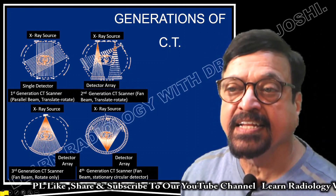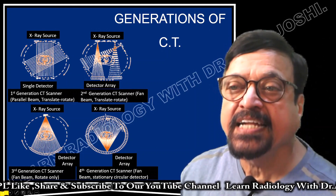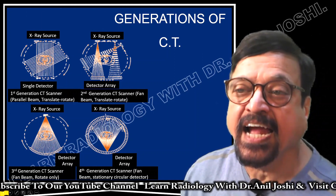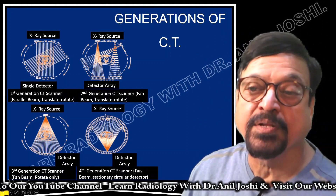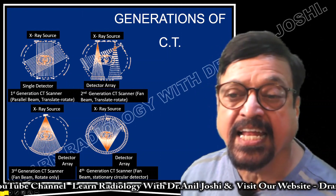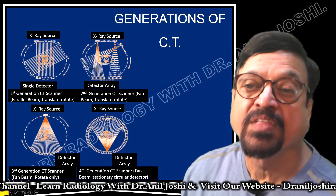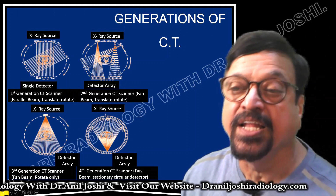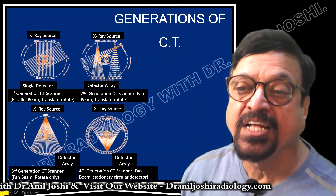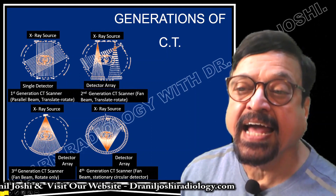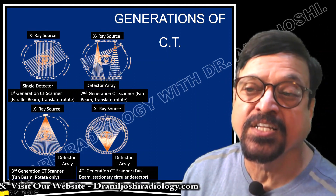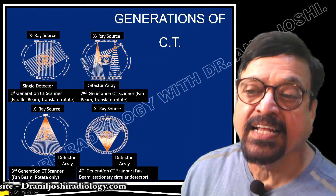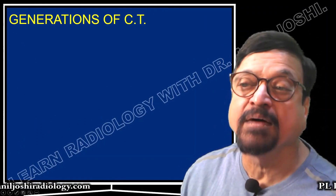In the second generation CT scanner there is a fan beam shape, and it is called translate-rotate. The tube is rotating and the detectors are also rotating, as you can see in the diagram. The third generation made a major revolution — it has a fan-shaped beam and is rotate-only. You can see the tube at one end and detectors at the other. This greatly changed CT machine speed and resolution. The fourth generation introduced detectors in an array along 360 degrees, with a fan beam and stationary detectors.